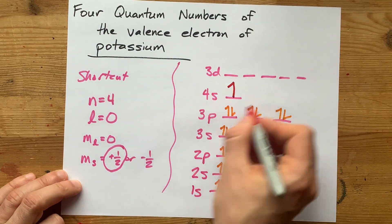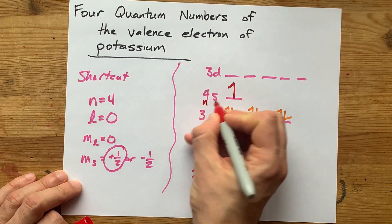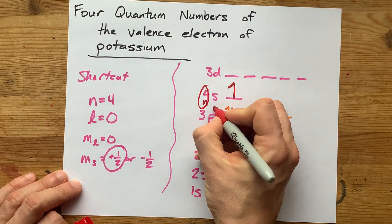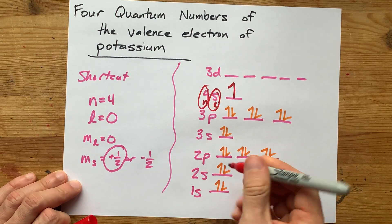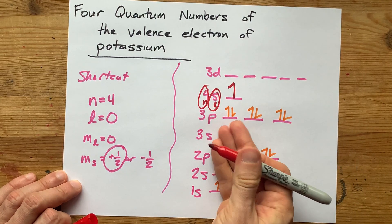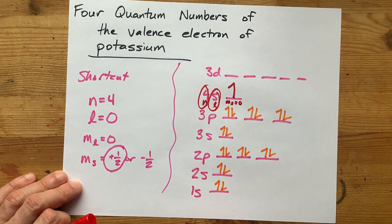Now, this is what's giving you the information about what the quantum number is. Here's N. N is 4. Here's L. S means L is 0. Now, each of the slashes corresponds to an ML. For this one, ML has to be 0.